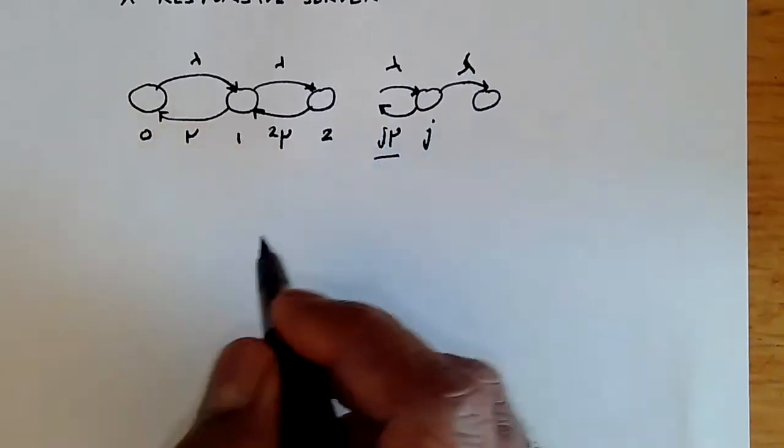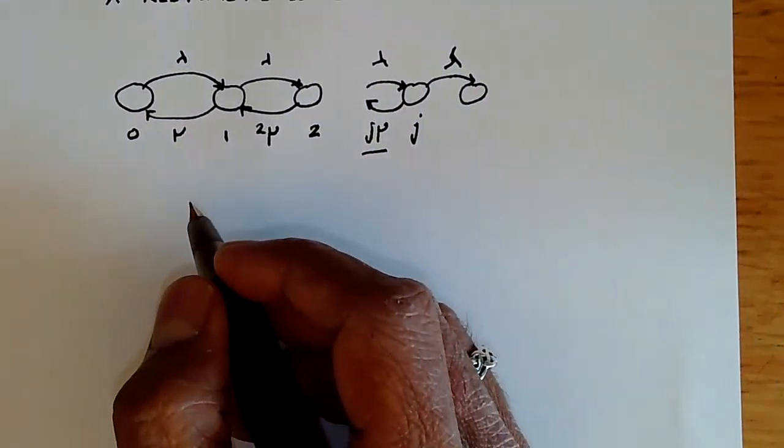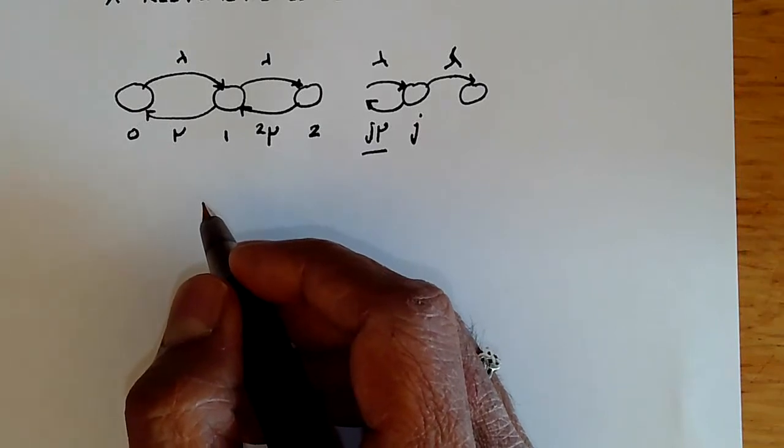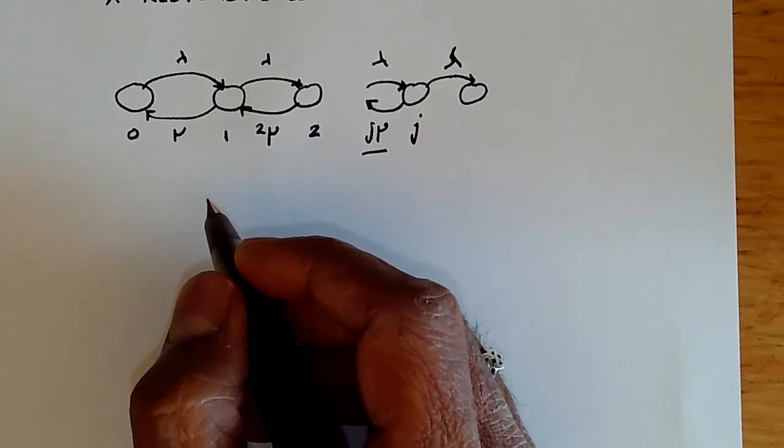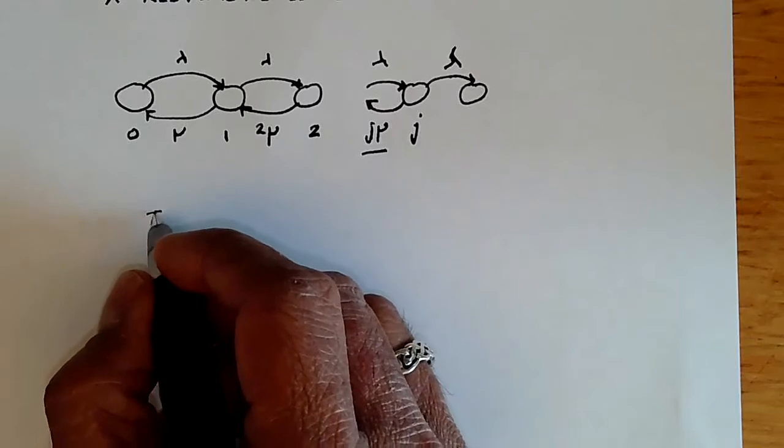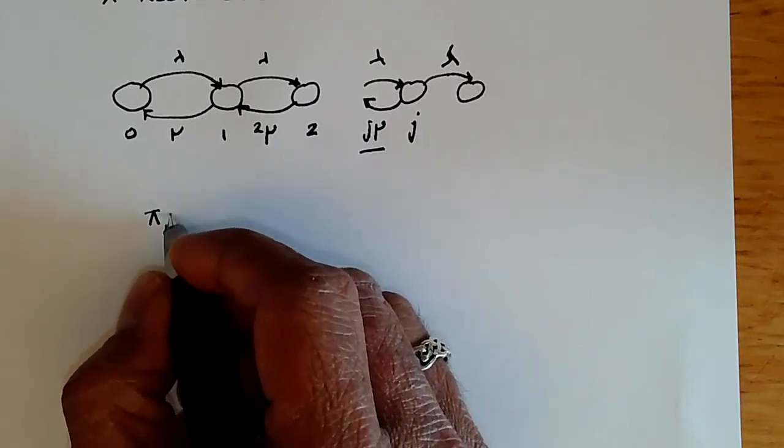So to study the process, we go back to the same equation that we had before, which was this equation which says that's pi j star. And this is for a general birth-death process.